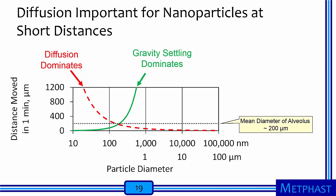To put things in further perspective, we need to change the scale of things we are considering. On the y-axis I show the distance the particle is displaced in one minute in micrometers, and the x-axis is particle diameter. For perspective, I add that the mean diameter of a human alveolus is 200 micrometers. Again, we can see that for particles smaller than 100 nanometers, diffusion dominates over gravity settling. These particles, if allowed to stay in the alveolar region for one minute, will likely be displaced a sufficient distance to hit the wall of the human alveolus.